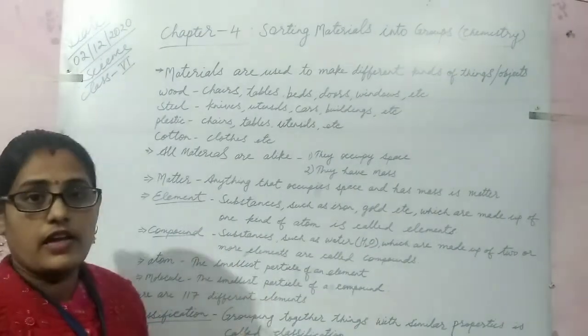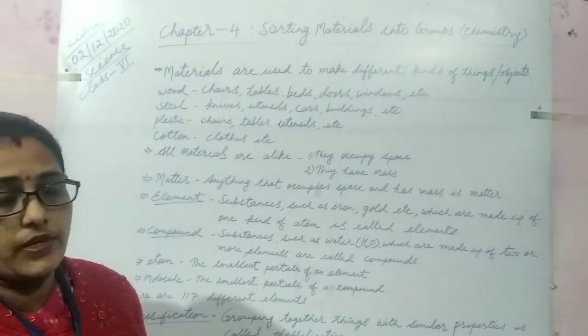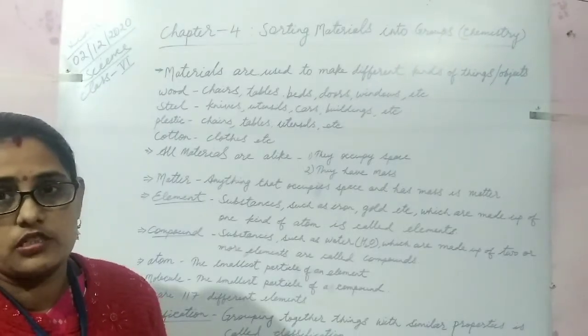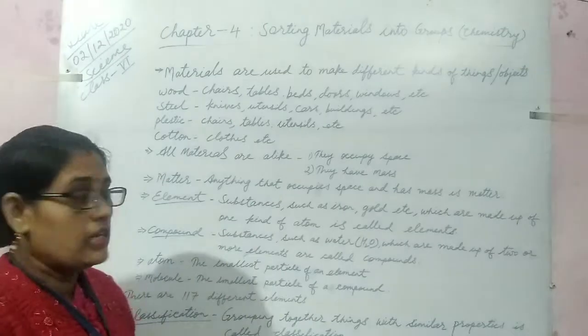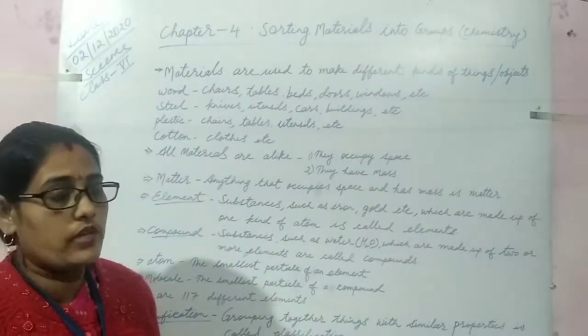All materials are alike. Materials, they occupy space and have mass. So next term which is very very important that is matter. Matter. The definition is written here. Anything that occupies space and has mass is known as matter.